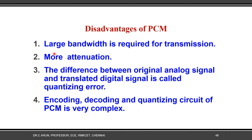Disadvantages of PCM: large bandwidth is required for transmission — this is the biggest disadvantage of digital communication, as digital modulation demands more bandwidth compared with analog. More attenuation occurs. The difference between the original analog signal and the translated digital signal is called quantization error. To reduce quantization error you must increase the number of quantization levels. Encoding, decoding, and quantizing circuits of PCM are very complex, so circuit complexity is higher in PCM compared with analog.